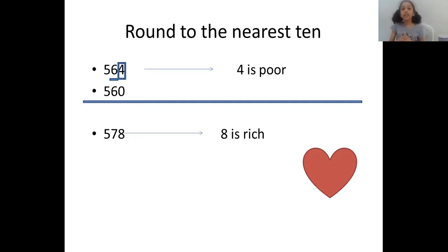Five hundred seventy-eight. We will underline seven and circle eight. Eight is rich, so give one more. So it will be five hundred eighty. And the ones place will always be zero.